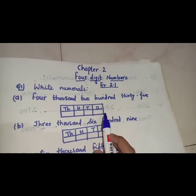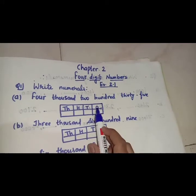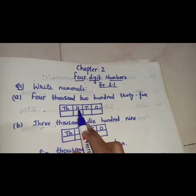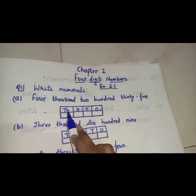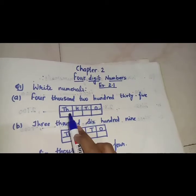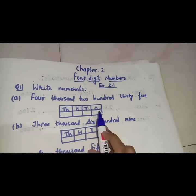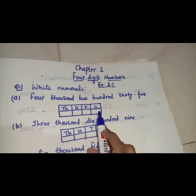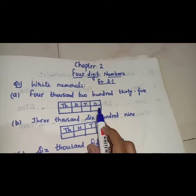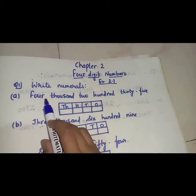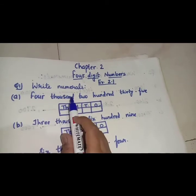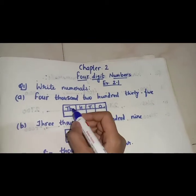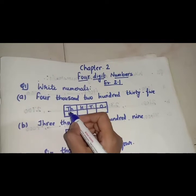I have made the place value chart for you: ones, tens, hundreds, and thousands. Now we will place the digits in this place value chart, so we will get the numeral form of this question. Here you can see 4 is at the thousands place — 4,000 — so we will write 4 here.